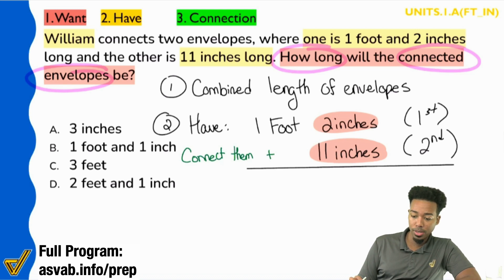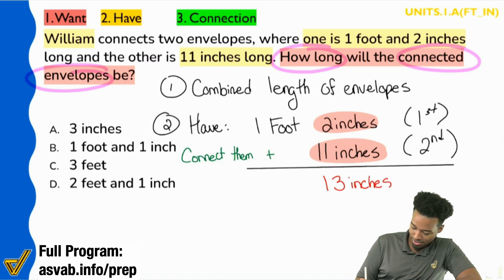If we go ahead and do two inches plus 11 inches, what is that going to give us? 13 what? 13 inches. That's going to be 13 inches. And then we have one foot over here added to nothing. So that'll just be one foot.